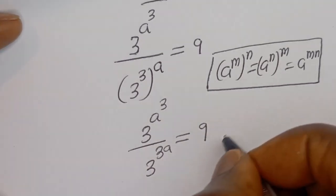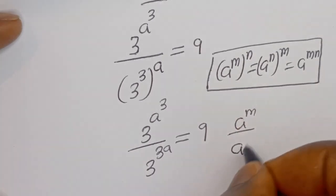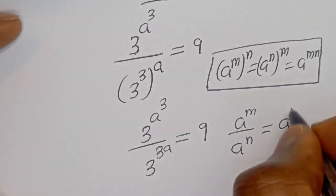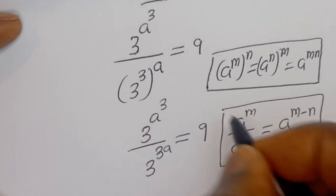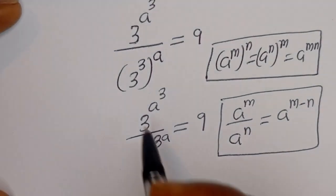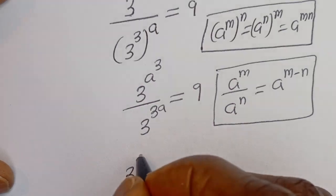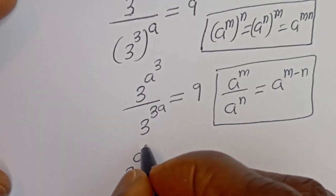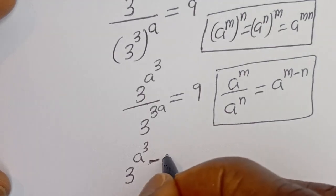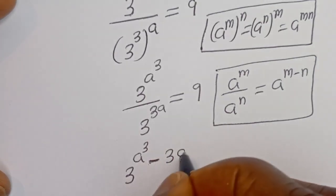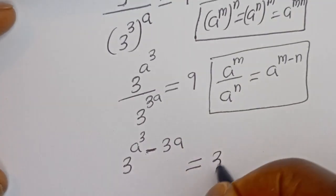Also, if you have A to the power of M divided by A to the power of N, this is equal to A to the power of M minus N. So 3A is equal to 9 can be written as 3 to the power of A squared.